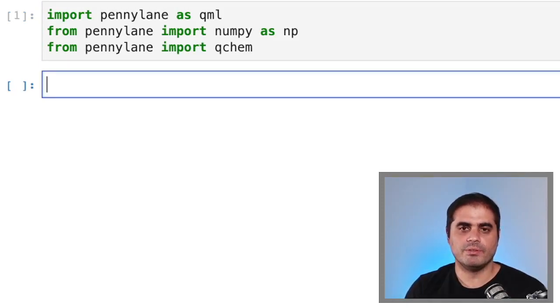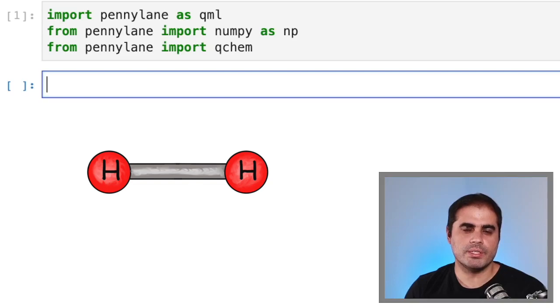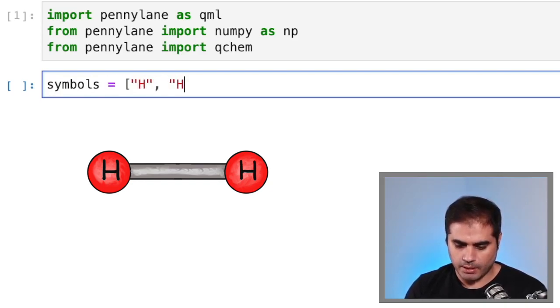The next thing that we need to do is to define what molecule we're going to be working with. We will be working with H2, which is just a molecule that is made up of two hydrogen atoms bonded together. So to specify this for PennyLane, we write symbols, which is just a variable, which will be an array that contains the symbols of the atoms that make up the molecule.